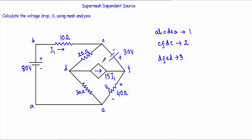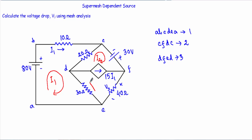These are the three possible meshes in this circuit. Now I have to denote the loop currents. I will denote the loop currents in the clockwise direction. In this loop I will get I1 in the clockwise direction. In this loop I will assume loop current I2 in the clockwise direction, and in this mesh I will assume mesh current I3 in the clockwise direction.